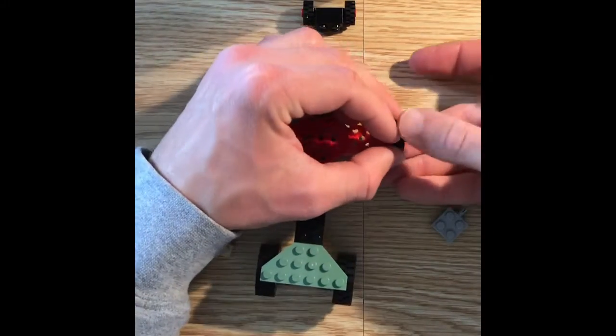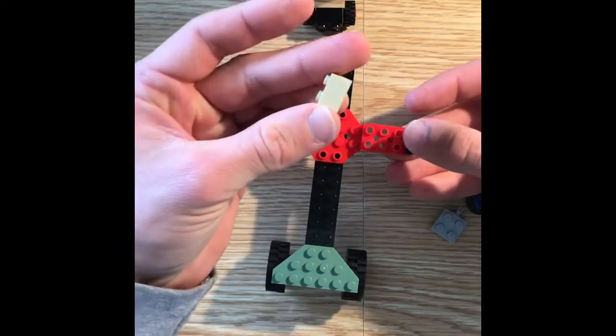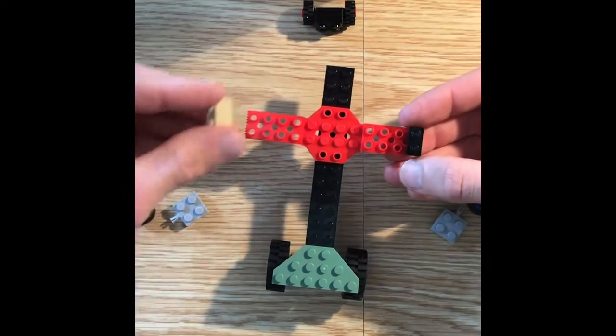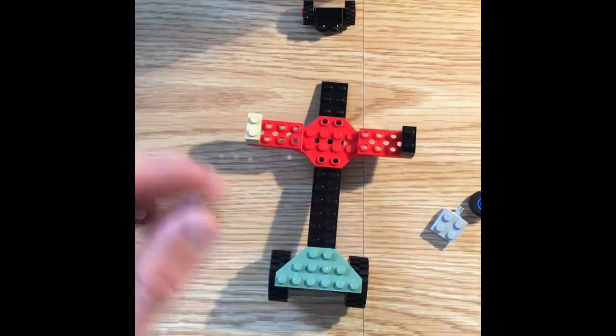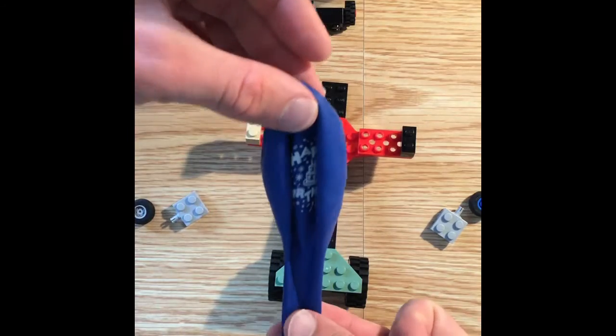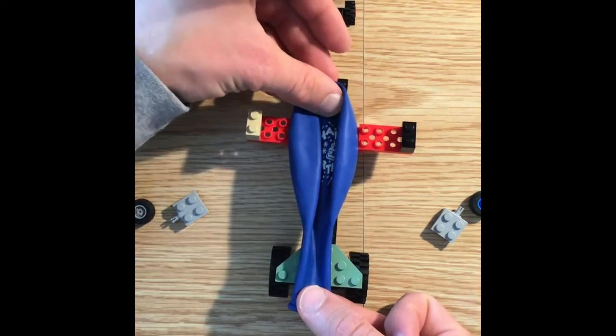So on top, I'm just going to put little sort of guard rails. So these are little two by one bricks right there. And so the balloon, when it's inflated, a little happy birthday balloon, or as it deflates rather, will sit here and slowly come to rest right there.